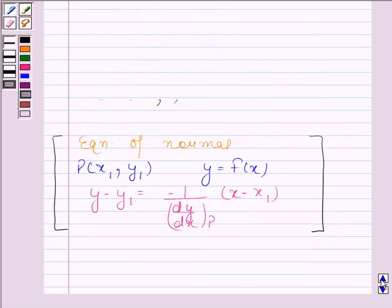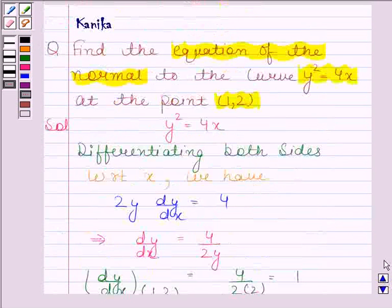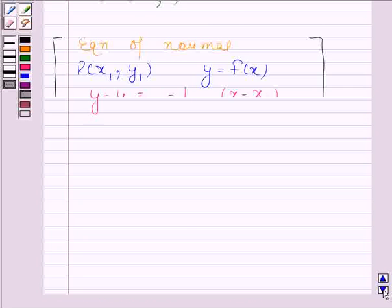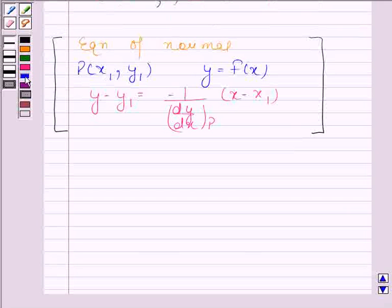Now here we have to find the equation of the normal to the curve y squared equals 4x at the point (1, 2). So by using this equation of normal, our required equation will be